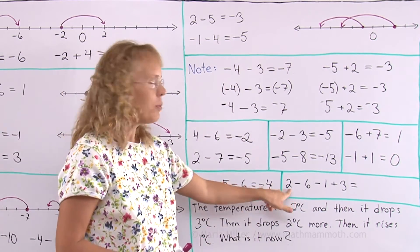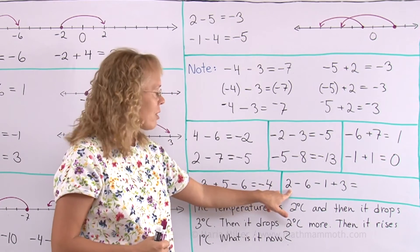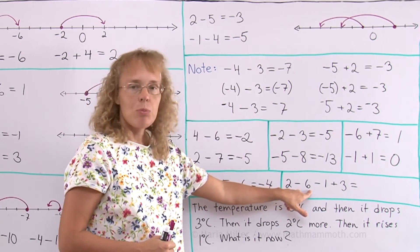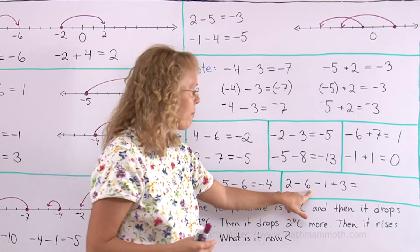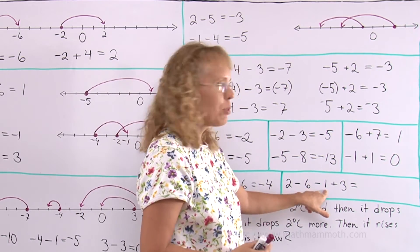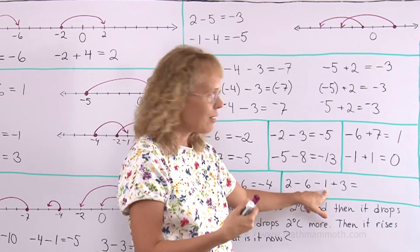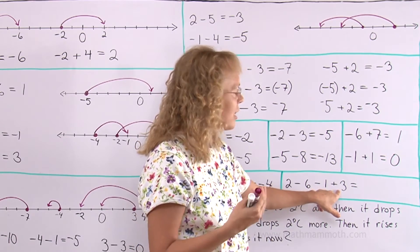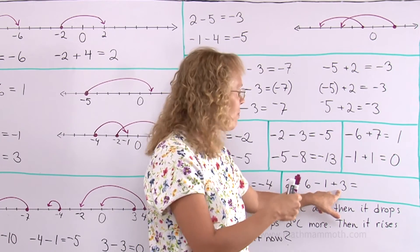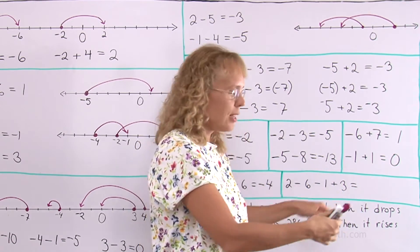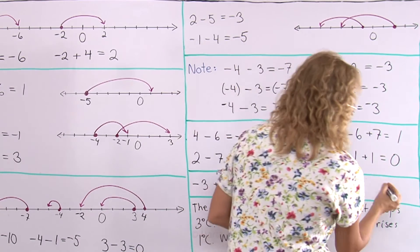Or here. Start at 2. Go 6 steps towards the left. So after this movement you are at negative 4. Then you go 1 more step towards the negatives. So you are at negative 5. Then you move 3 steps towards the 0. Negative 5 plus 3. So you will end up at negative 2.